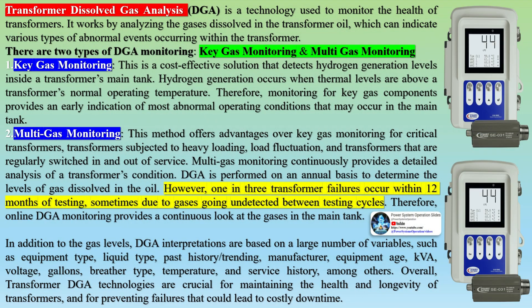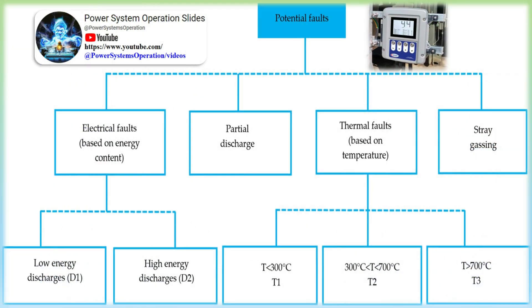Key gas monitoring is a cost-effective solution that detects hydrogen generation levels inside a transformer's main tank. Hydrogen generation occurs when thermal levels are above a transformer's normal operating temperature. Therefore, monitoring for key gas components provides an early indication of most abnormal operating conditions that may occur in the main tank.